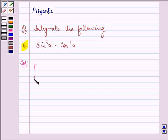Now here we need to integrate the function sine cube x into cos cube x with respect to dx. So we can have, we can write sine cube x as sine square x into sine x, right?